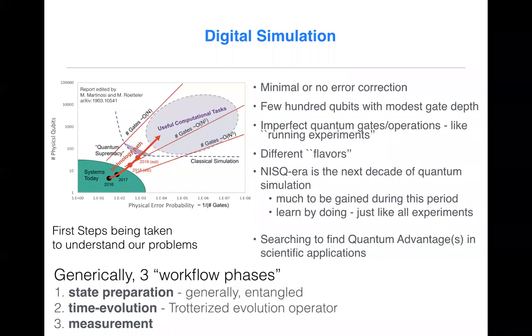So, generically, there's three phases for digital computation that one considers. One is state preparation, the initial preparation of the quantum register, time evolution, and this is typically done with a Trotterized time evolution operator. And then one has measurements, and each of these areas is an area of active research, both QIS, nuclear particle physics, condensed matter physics, all scientific applications. And there's a lot of room for improvement generally.